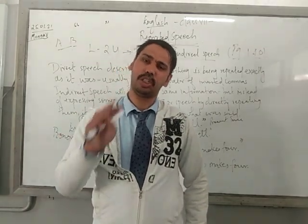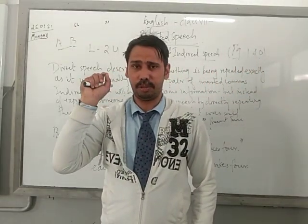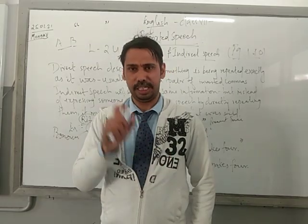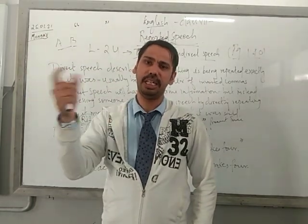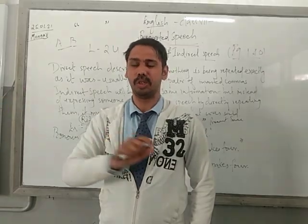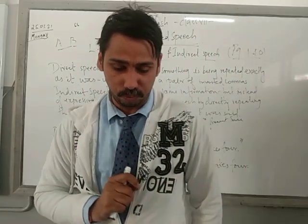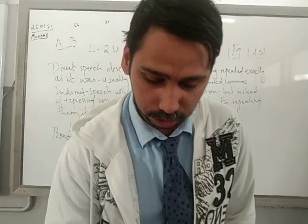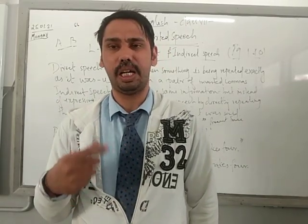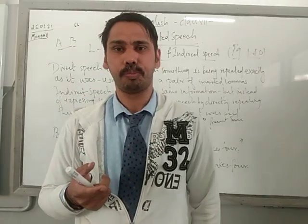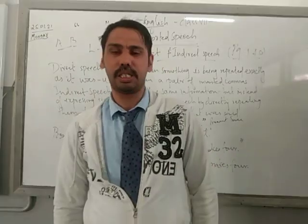Today the introduction is: direct speech describes when something is being repeated exactly as the statement of the speaker, always written in inverted commas. When changing to indirect, the inverted commas are removed, 'that' is used as a conjunction, and the rest of the statement follows. This is the introduction of direct and indirect speech — the last chapter of grammar we are handling. Watch the video carefully; if you have any doubt or question, contact me. Notes are available in PDF format. I will see you next class — thank you and God bless you.